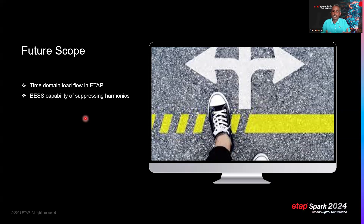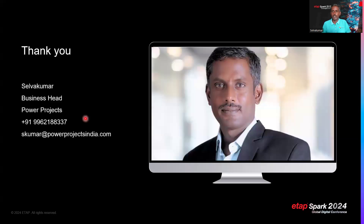Future scope includes performing time-domain load flow by integrating wind turbine generator power output data — such as five-minute or fifteen-minute block intervals — directly into ETAP. Battery energy storage system capability to suppress harmonics can also be explored. Further possibilities include implementing ETAP real-time digital systems, ETAP SCADA, or ETAP microgrid controllers so the entire control system can be validated in real time.